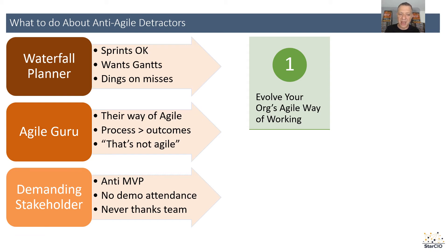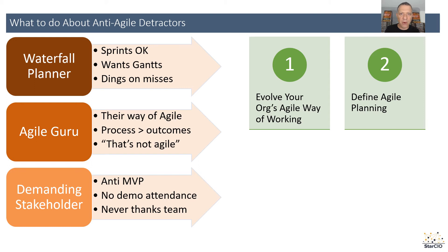Defining your way of doing agile is really key. Second is to focus on some form of agile planning. At StarCIO we have StarCIO agile planning that we help organizations with, but even if you don't use our form of continuous planning, there are lots of other flavors of planning your backlogs. That's really key to getting waterfall planners and stakeholders on board because they get a sense of where you're going with your program.